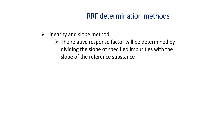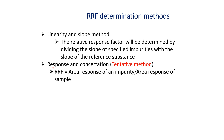Several methods are available for determination of RRF. Of these, the linearity and slope method is widely used in the industry and is acceptable by regulatory agencies. The relative response factor is determined by dividing the slope of the specified impurity with the slope of the reference substance. There is also another tentative method using response and concentration, used only during the development stage. In this method, RRF is calculated as the area response of an impurity divided by the area response of the main analyte. Once the project is developed, RRF must be calculated using the linearity and slope method.